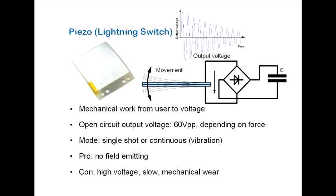Positive is, there is no electrical field emitted. But it is slow. The voltage may reach a high level and it may wear out.